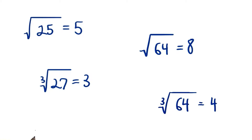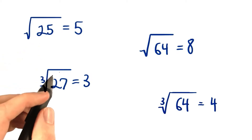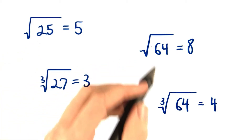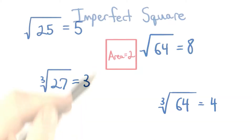In the first lesson, we were able to simplify radicals because they were perfect squares or perfect cubes. But not everything we come across is going to be so perfect.